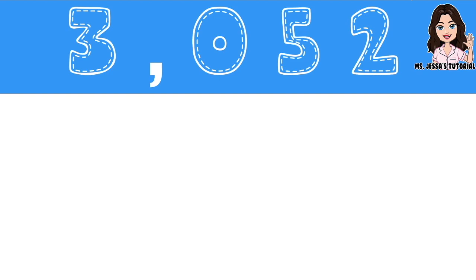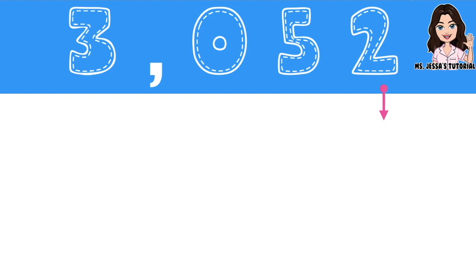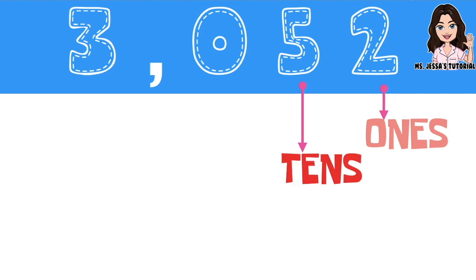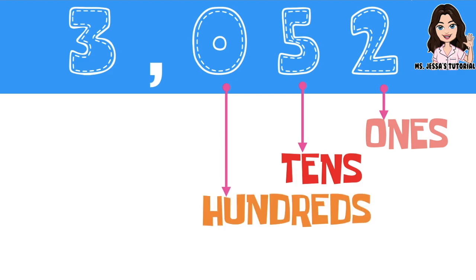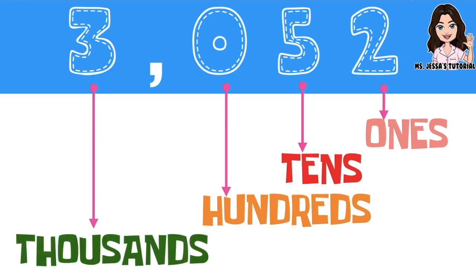How about if we have 30,052? Again, children, in identifying the place value, you are going to start from the rightmost digit going to the leftmost digit. So these are the place values of digits in 30,052.